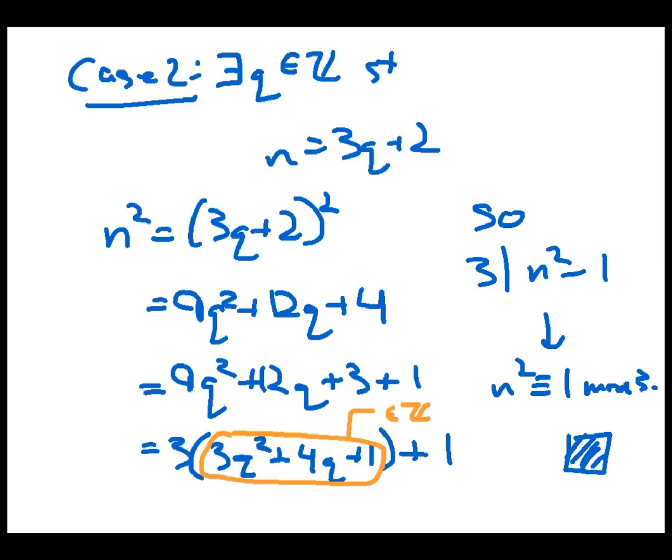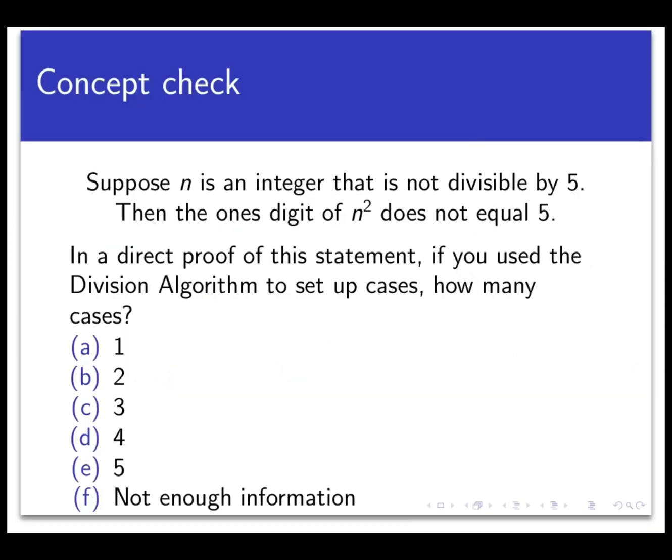So let's end this off with a concept check to see how well you are understanding this particular strategy. Consider the following proposition. Suppose n is an integer that is not divisible by 5. Then the 1's digit of n² does not equal 5. So if you were going to use a direct proof here and use the division algorithm to set up cases, how many cases would you use? Would it be 1, 2, 3, 4, 5, or not enough information?